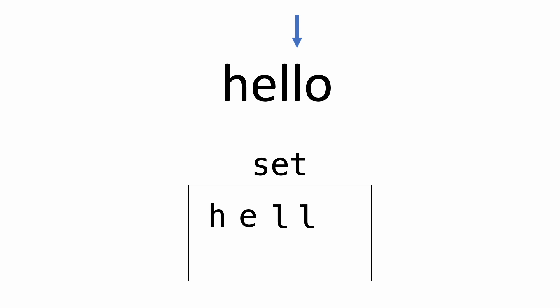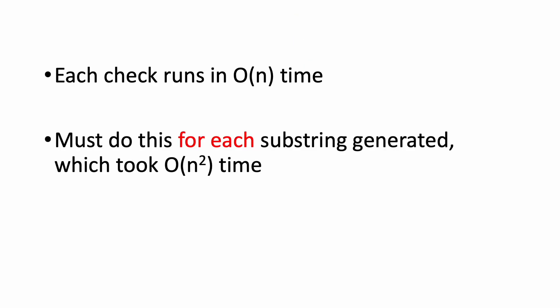Then when we come across the second L, we see that we already have an L, so hello is eliminated. Now, each one of these checks runs in O time, and we'd have to do that for every single substring, which took O time to generate. So in total, the brute force algorithm ends up running in O cubed time.